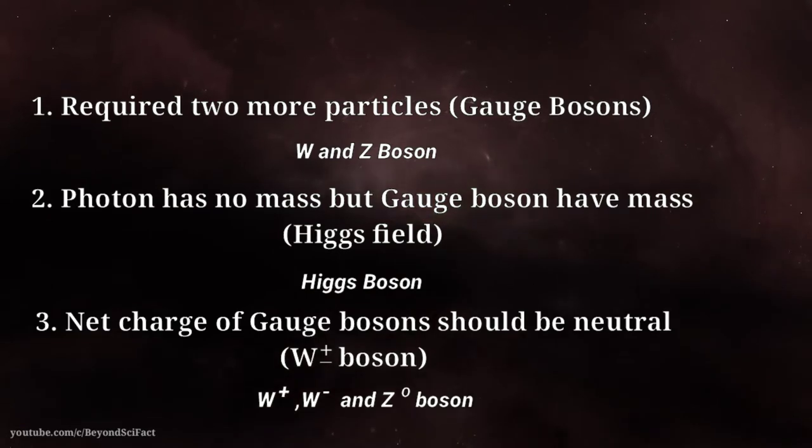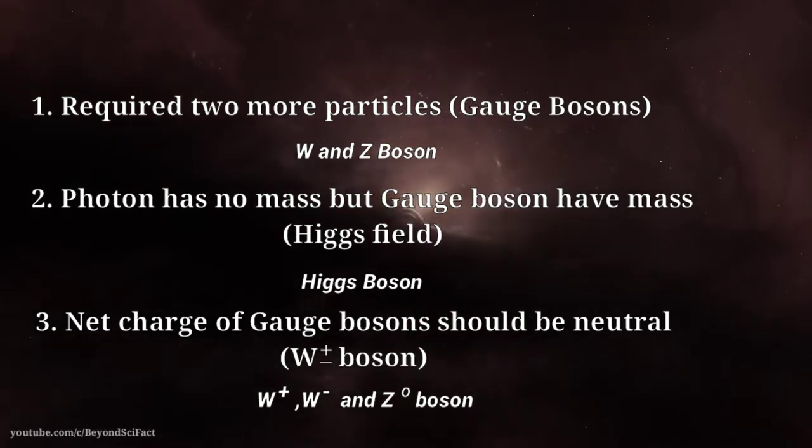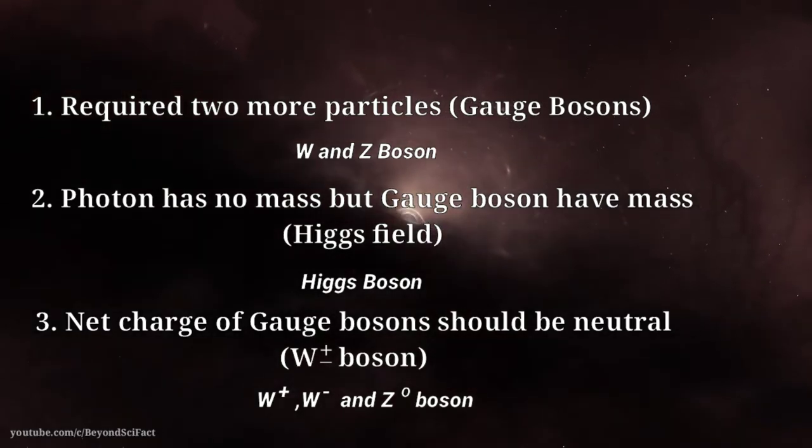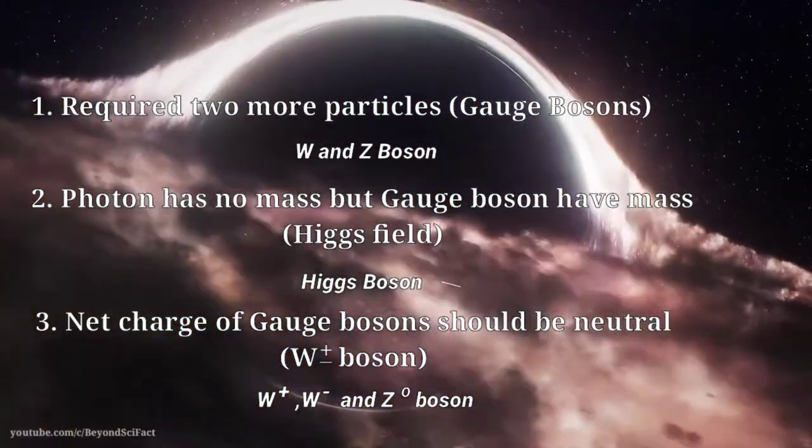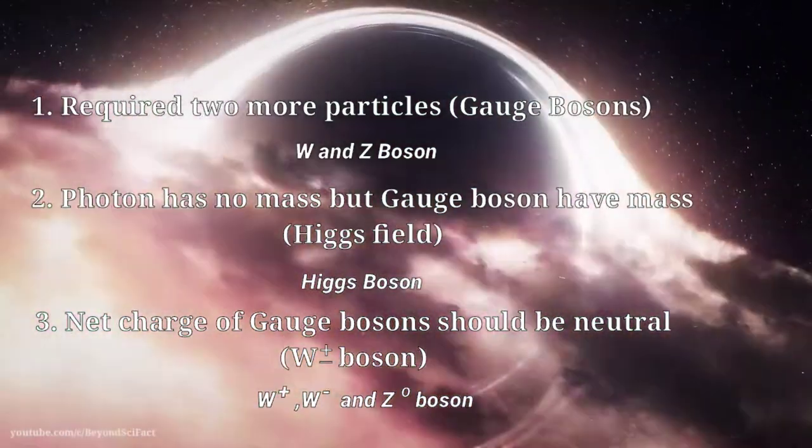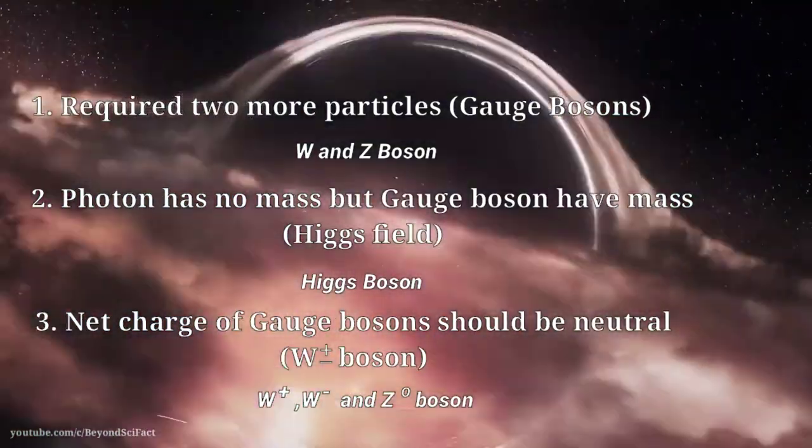Third, to balance the charges, they said the W boson came in a pair of two particles: W plus boson and W minus boson, which neutralize each other, and the Z boson has no charge and spin.